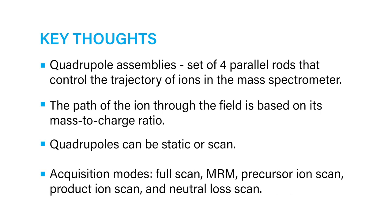And lastly, they can also scan where the RF and DC voltage settings are ramped to let ions through the quadrupole in order of increasing mass-to-charge ratio. A wide range of acquisition modes such as full scan, MRM, precursor ion scan, product ion scan, and neutral loss scan are available on tandem quad mass spectrometers.